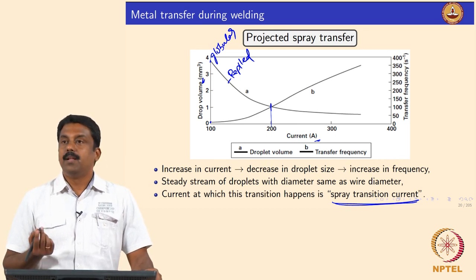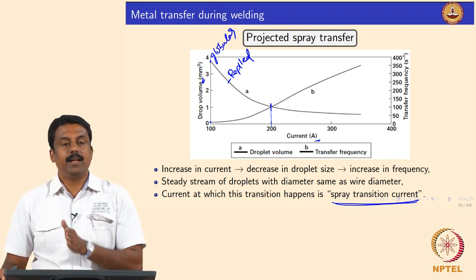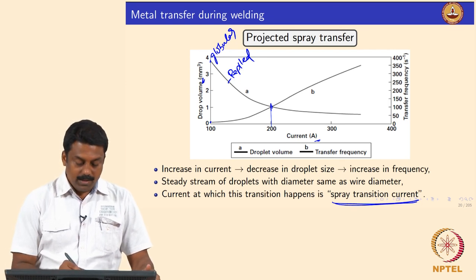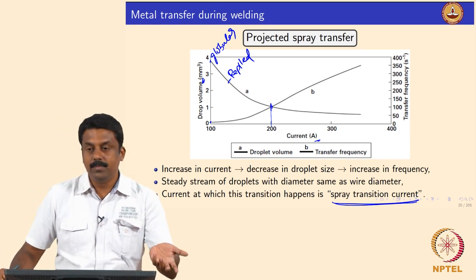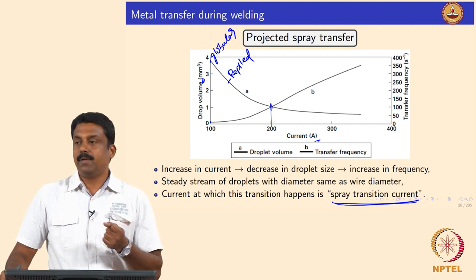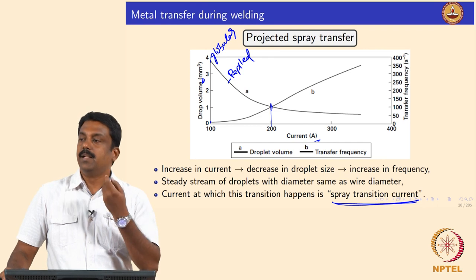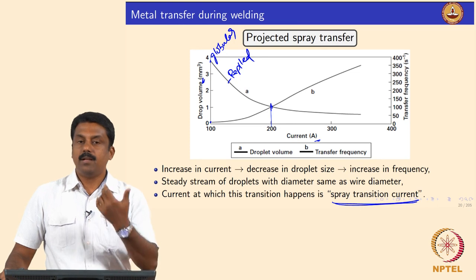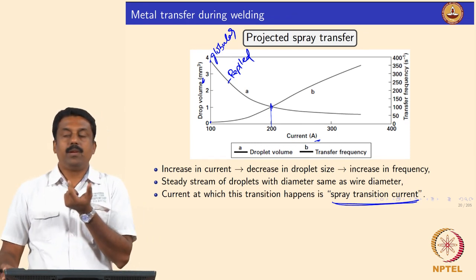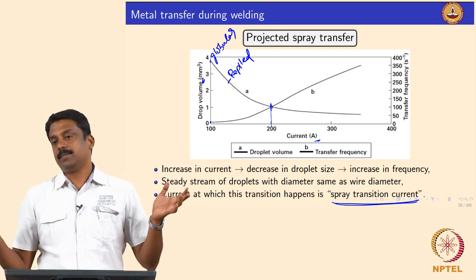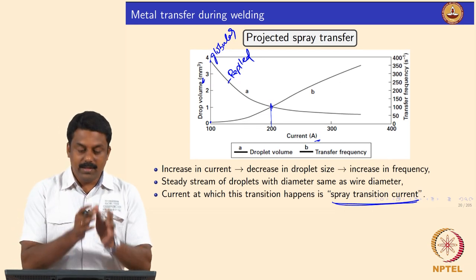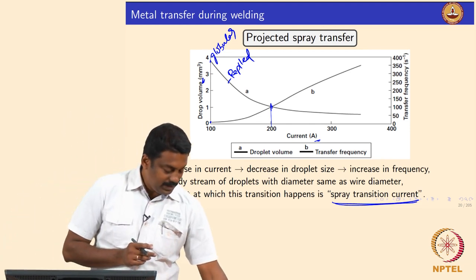The spray transition current is where the droplet diameter changes from globular to spray — smaller diameter with very high transfer frequency. You transfer more volume of molten metal with smaller droplets, which is beneficial because your feed rate and welding rate increase since you melt more and transfer more volume to the workpiece. Transferring smaller droplets also reduces spatter formation. With large droplets there is a possibility of the droplet exploding and causing spatter, whereas smaller droplets reach the workpiece intact.